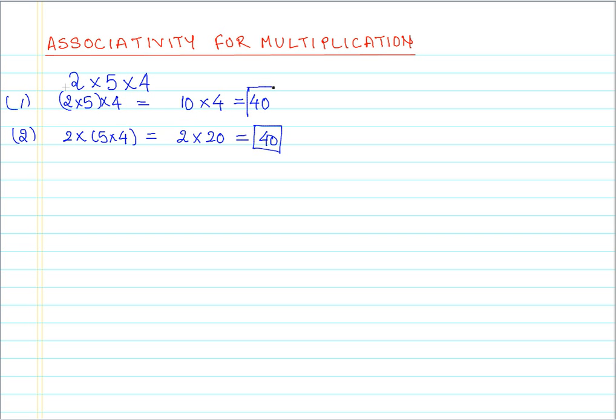Now let us try to do it in another way. Instead of grouping the first two numbers, we group the last two numbers. That is 2 into 5 cross 4. When 5 is multiplied by 4, we have 2 multiplied by 20. When I take this product, then also we get 40. What we have seen here is that even when we change the grouping of the numbers for multiplication, we still get the same result.